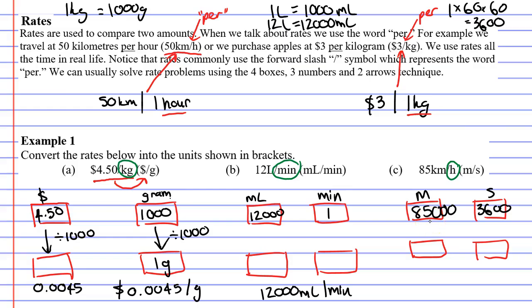What we need to do is convert the amount on the right to one, and we'll do this by dividing it by itself — by 3,600 — and we'll do it on both sides. 85,000 divided by 3,600 equals 23.6 to one decimal place, which gives us our solution of 23.6 metres per second. That concludes our video introducing rates.